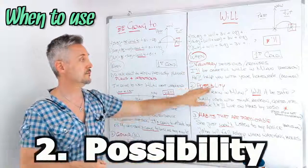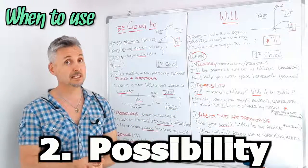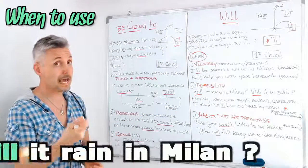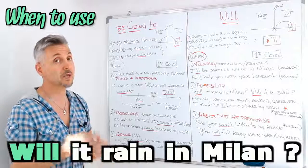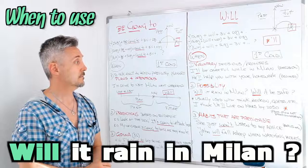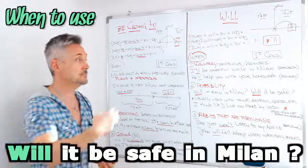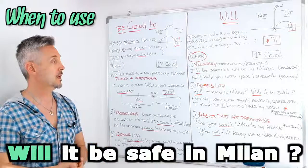The second usage is for possibility. Like my example, will it rain in Milan? I don't know, but will it rain? It could be, right? Will it be safe? This is another example. Will it be safe?